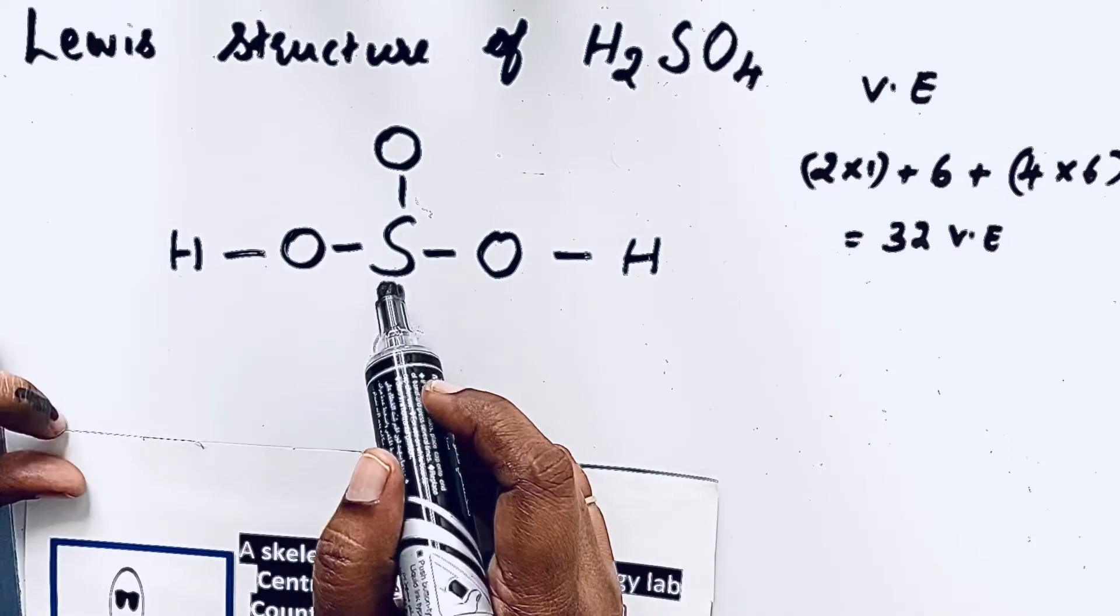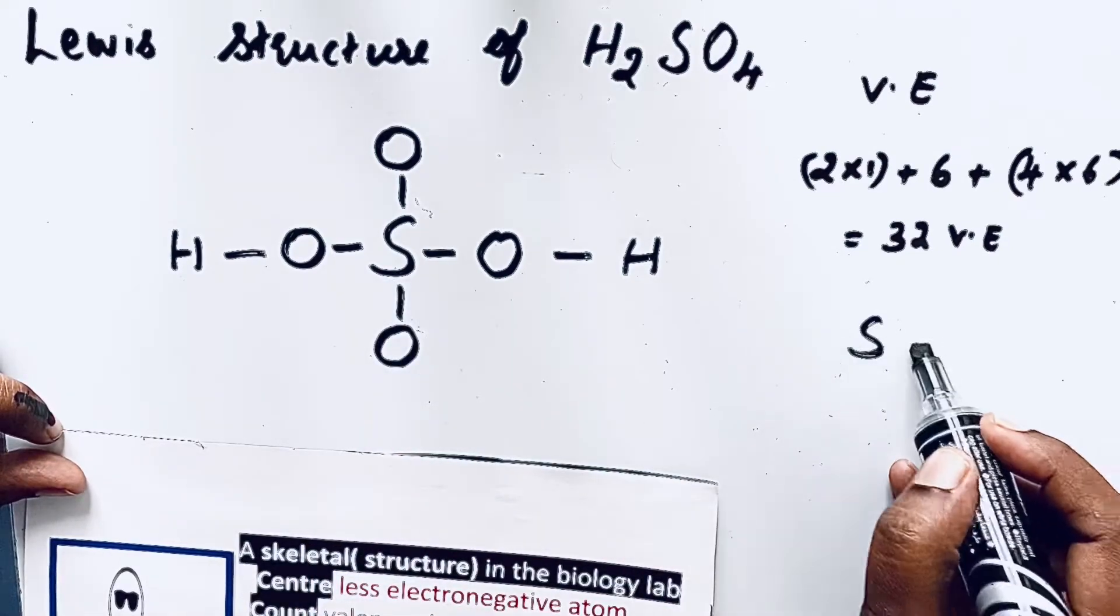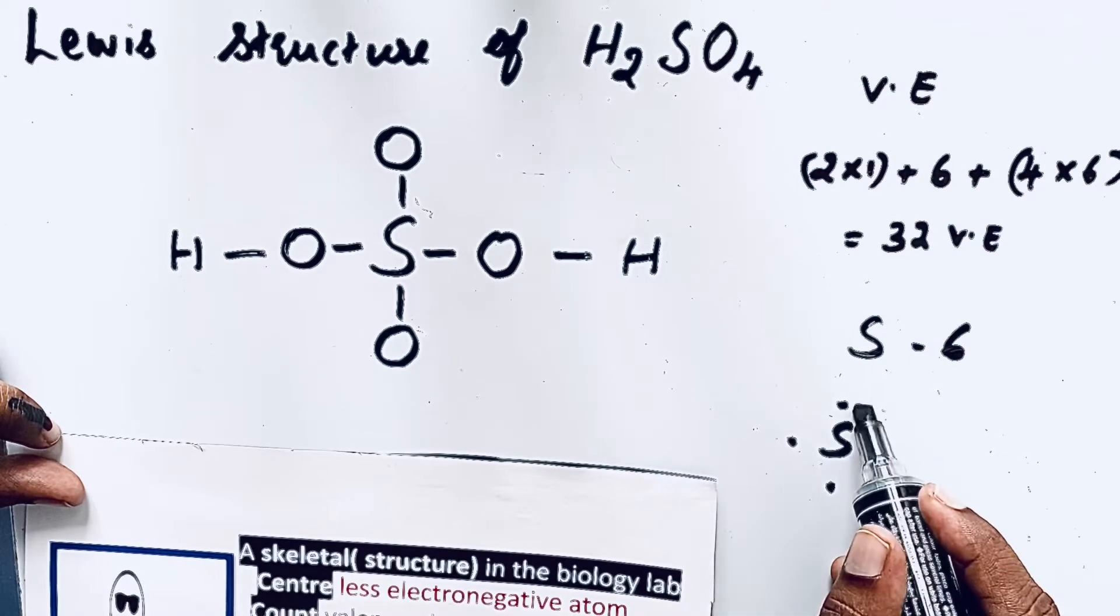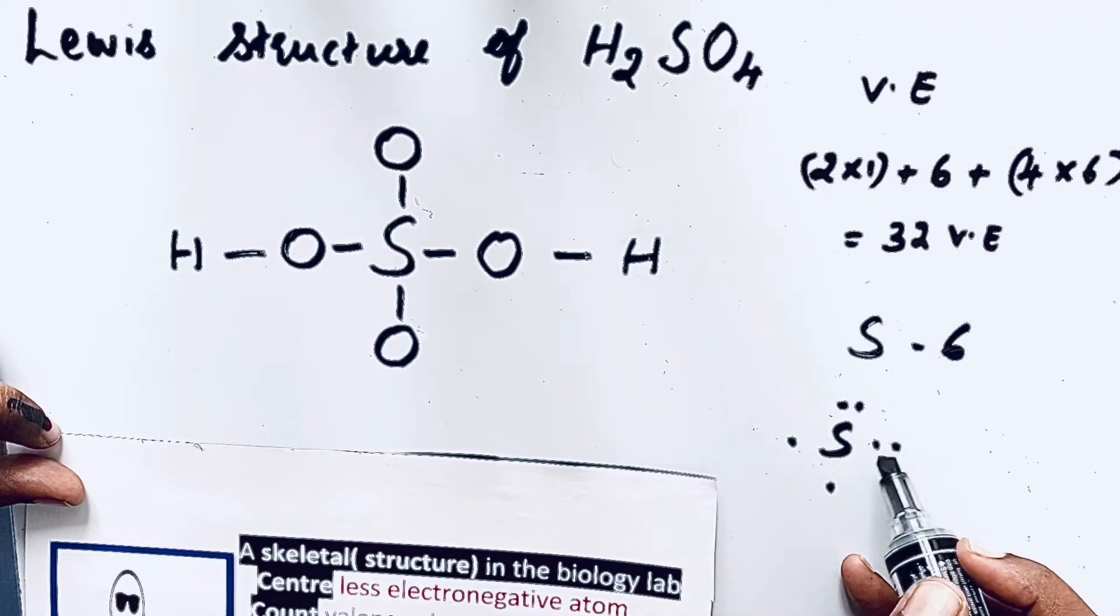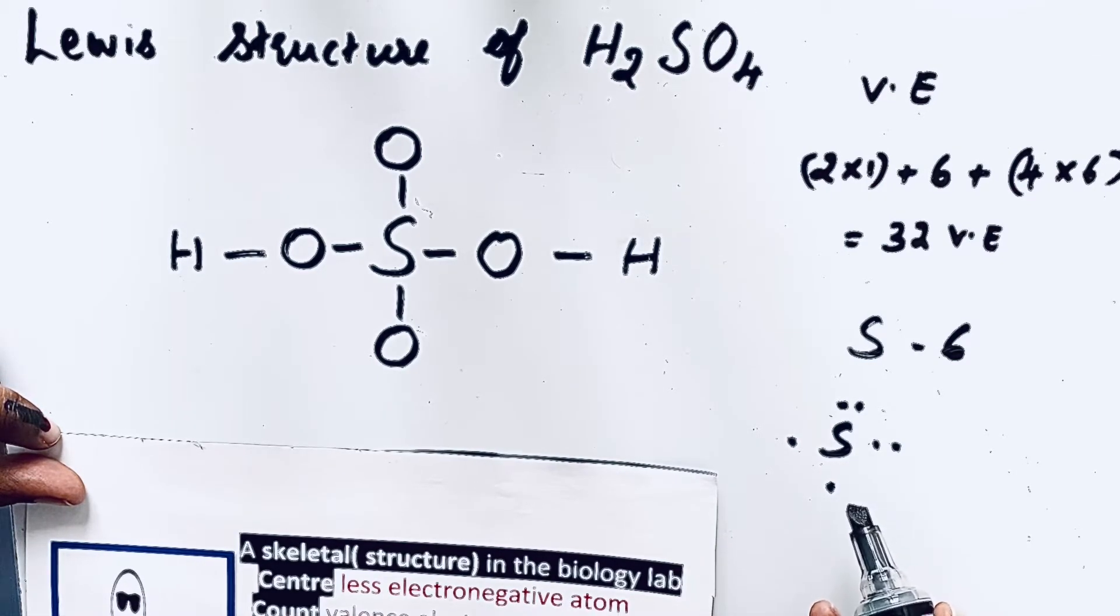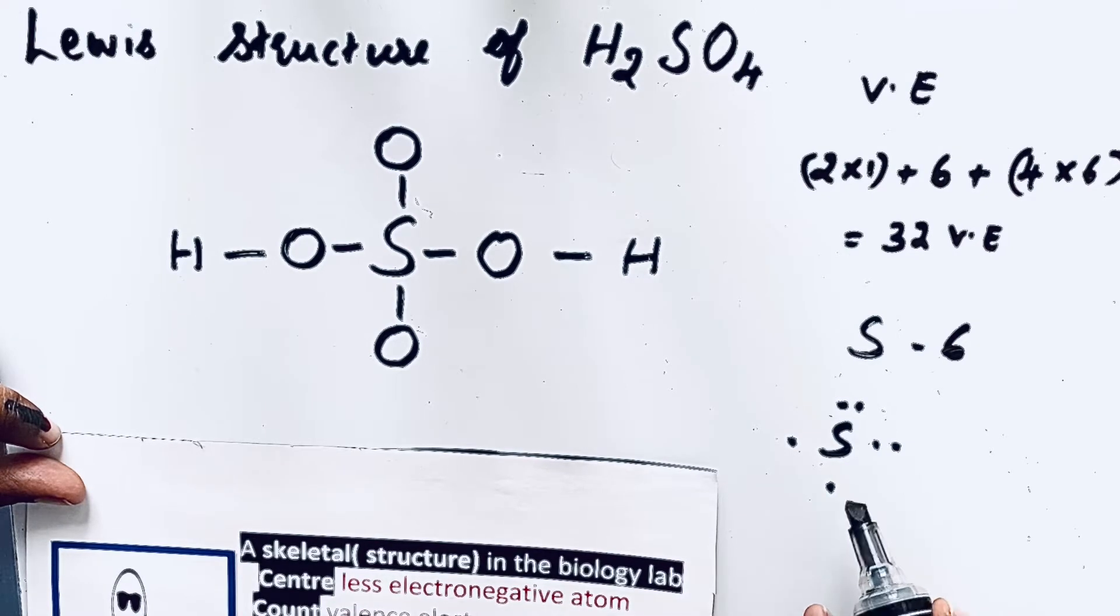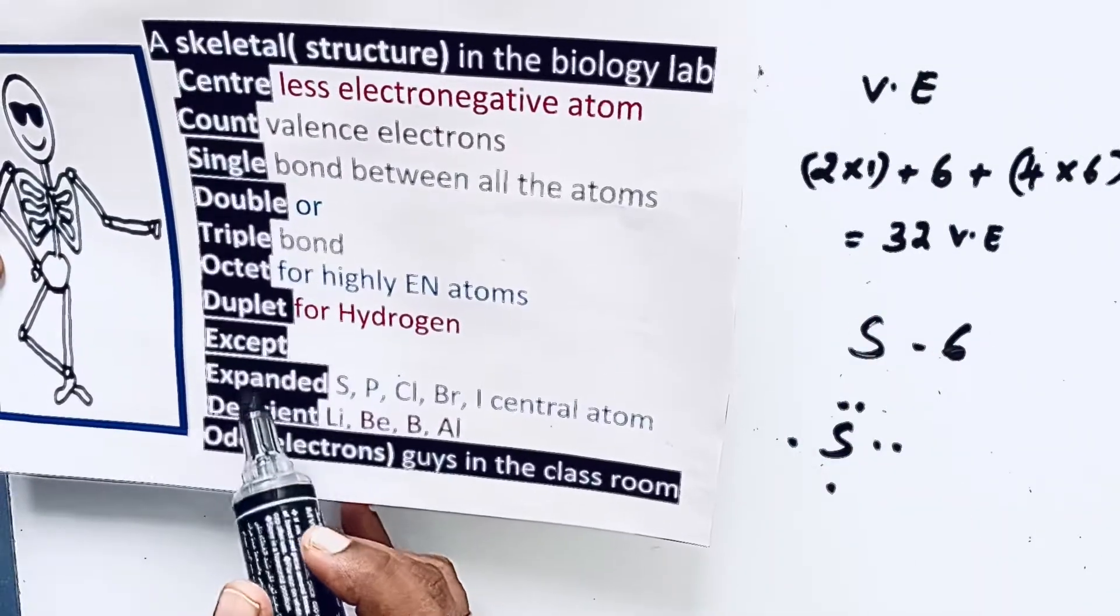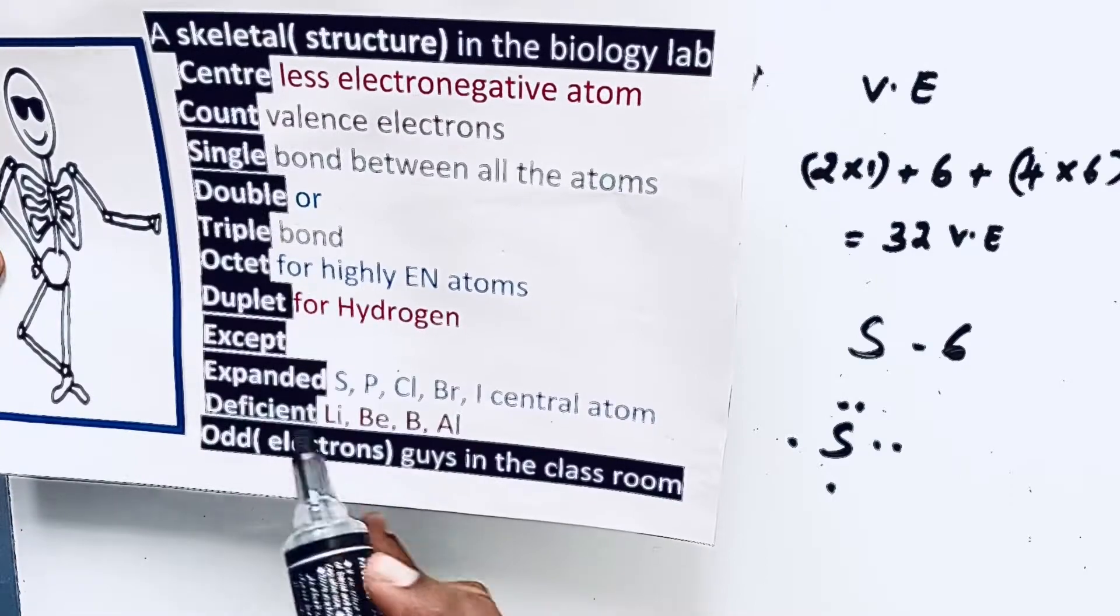First let us see that sulfur. Sulfur has valence electron six. So that electron dot structure: one, two, three, four, five, six. Two lone pairs and two unpaired electrons are present. But sulfur is in third period, so after third period the elements have that availability of the d orbital, so they can expand. For example, in the mnemonic you can see except expanded, deficient, odd guys in the classroom.